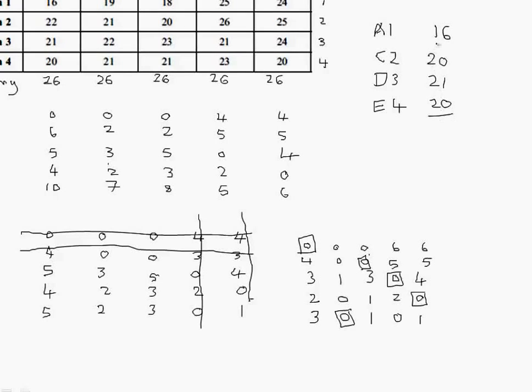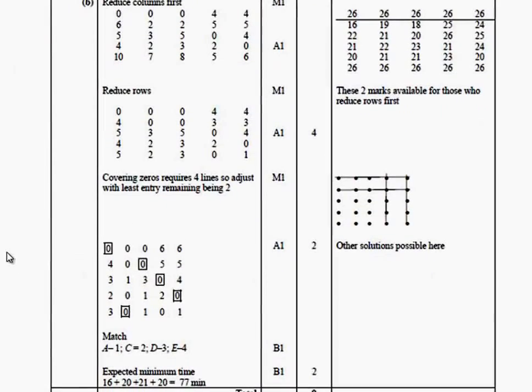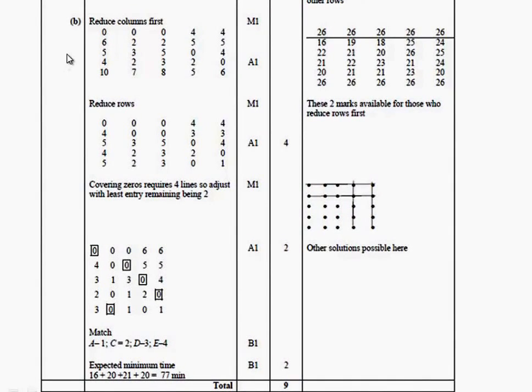Making a grand total of 77 minutes. And that is the Hungarian algorithm. Let's have a quick check through the mark scheme now that we've succeeded in answering the question. We get one mark for creating the extra row with all the values the same. We would usually use the value of the highest item there, the highest value in the array of 26.